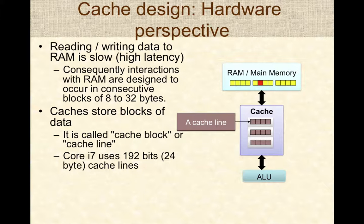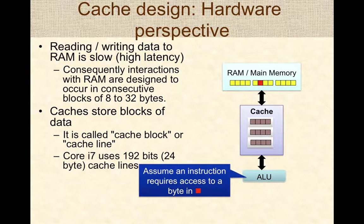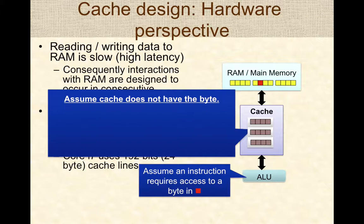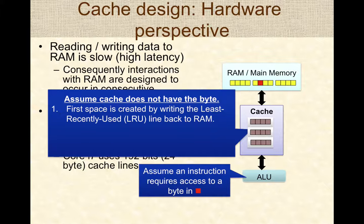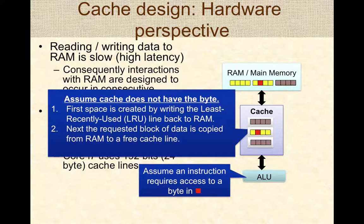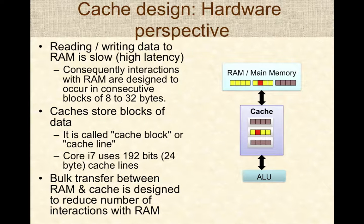Consider a scenario where the ALU needs access to some block of data in memory, and the cache does not have that block. First, space is created in the cache line by moving the least recently used block of data to RAM. Then the requested block is copied from RAM to a free cache line, and the ALU uses the necessary data block. Bulk transfers between RAM and cache in terms of blocks reduce the number of interactions with RAM and increase overall bandwidth.